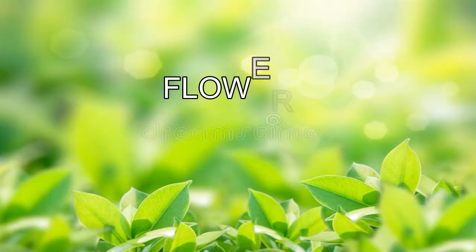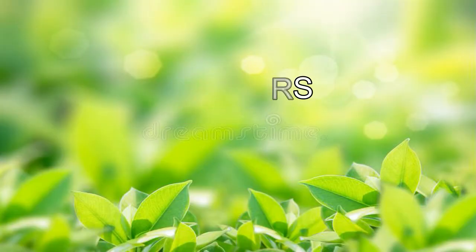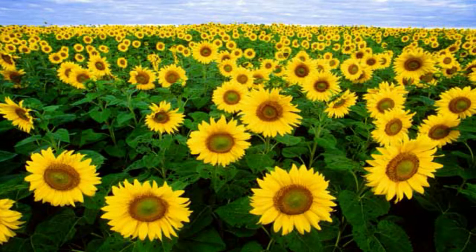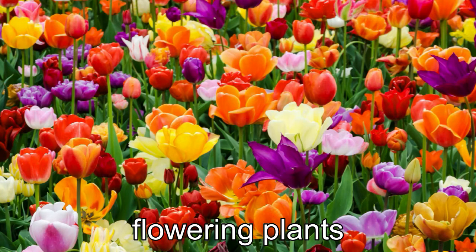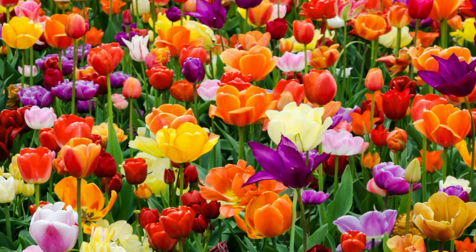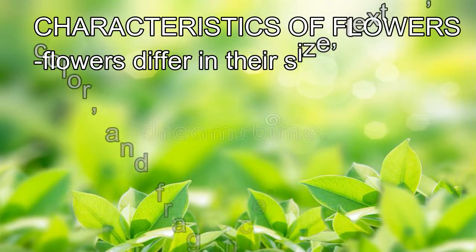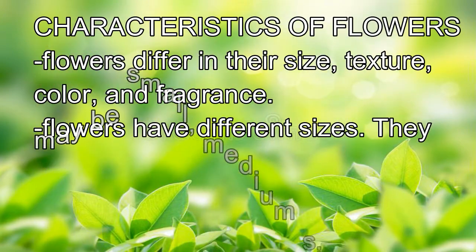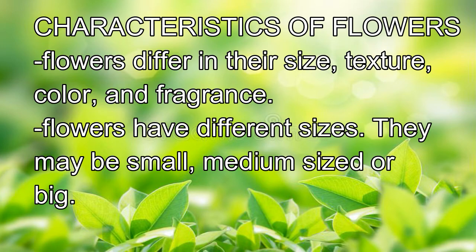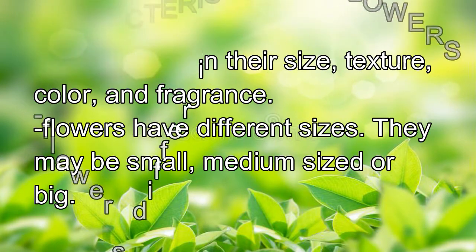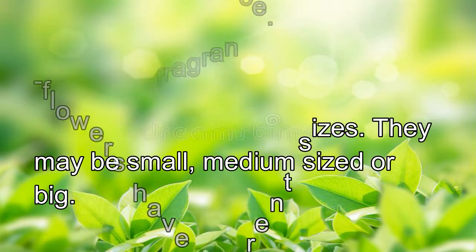Flowers: not all plants bear flowers. Plants that bear flowers are called flowering plants. Many flowers are brightly colored and fragrant to attract insects, which help in the process of pollination. Flowers differ in their size, texture, color, and fragrance. They may be small, medium-sized, or big.